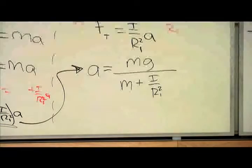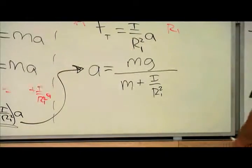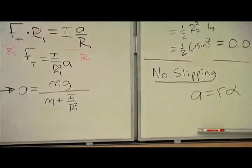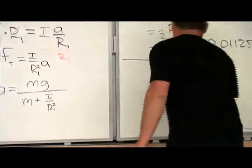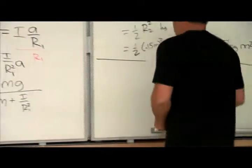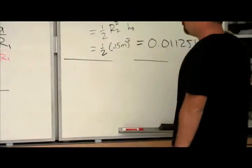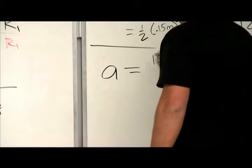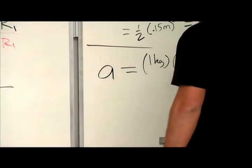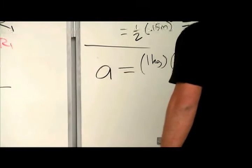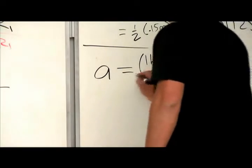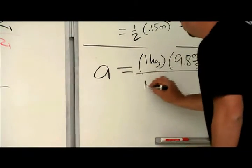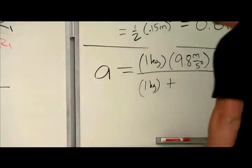Now let's plug in the values. So, well, let me erase this stuff. So I know the moment of inertia is this value. So I get a equals 1 kilogram times the acceleration of gravity, 9.8 meters per second squared.